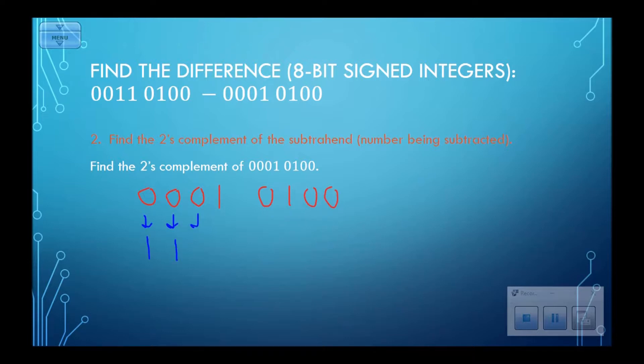0 changes to a 1. 0 to a 1. 0 to a 1. 1 to a 0. 0 to a 1. 1 to a 0. 1 to a 0. 0 to a 1.